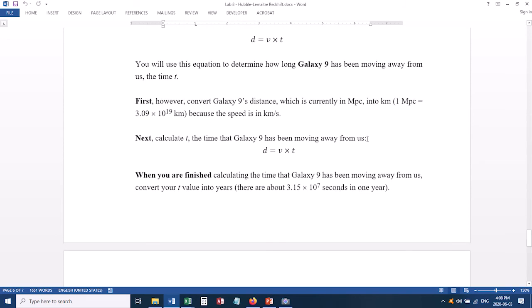However, before you start, you first want to take the distance for galaxy 9, which is currently in megaparsecs, and you want to convert that into kilometers. Because that'll help our units cancel out correctly later. So the lab manual gives you the conversion factor here for converting megaparsecs into kilometers. You do that first. Then you do the calculation to figure out what the time is. And when you're finished, the time that you get is going to be in seconds, and you want to convert that to years.